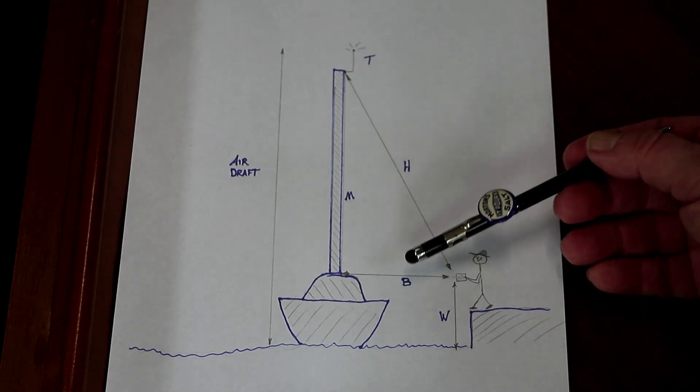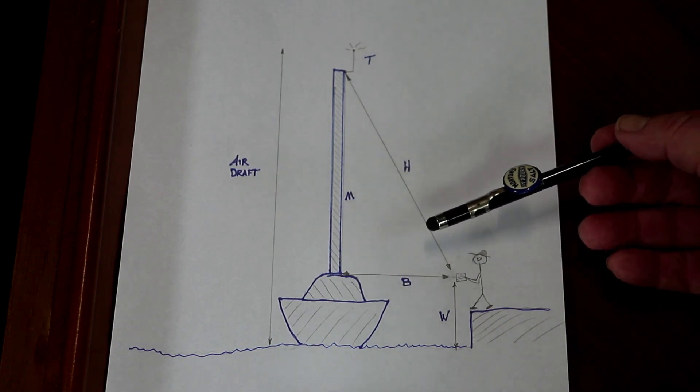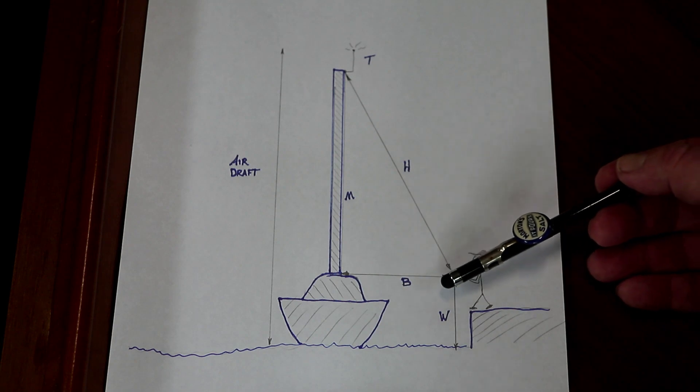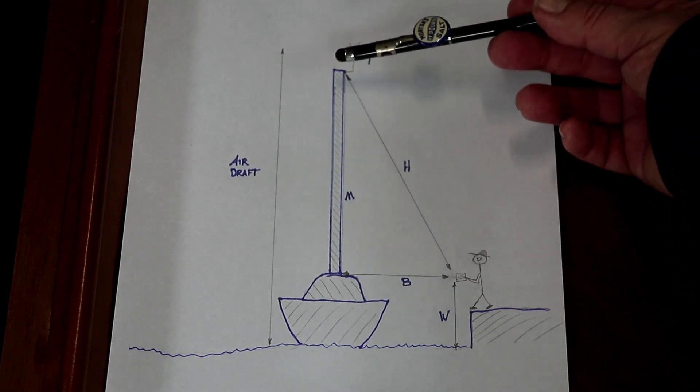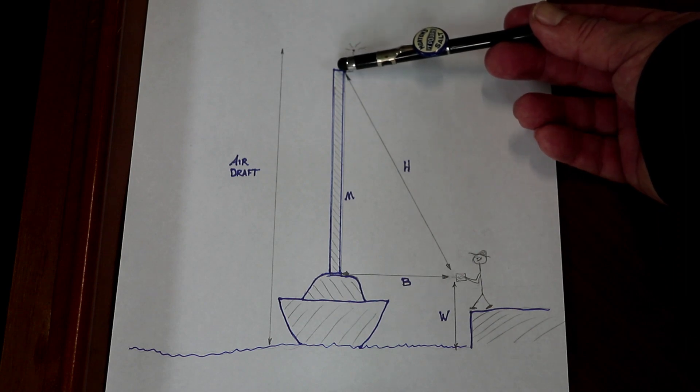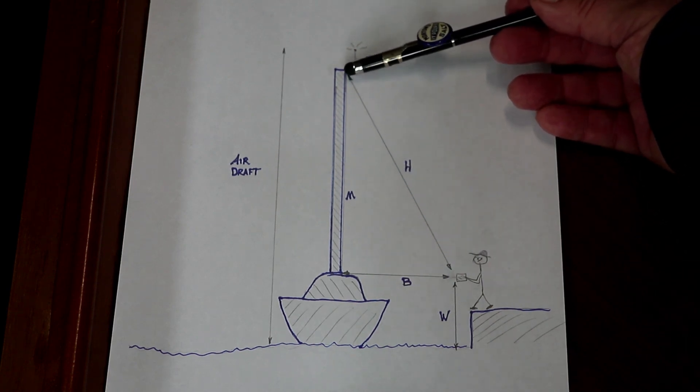One thing to note is doing these measurements in the evening just after sunset makes it much easier, because it's easier to see the red dot from the laser tool on the mast when there's a little bit of darkness in the sky, especially in this measurement trying to hit the very top of the mast.